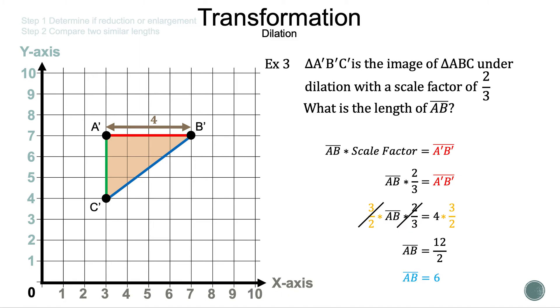Does that make sense? Our scale factor is less than one, so AB should be bigger than A'B' — and it is: six is greater than four. So we did it correctly.